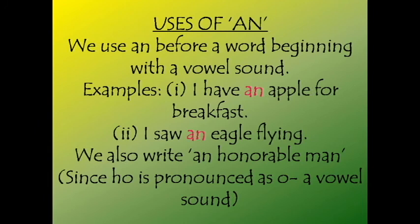Let us now have a look at the uses of an. We use an before any word which begins with a vowel sound — that is, which has the sounds of A, E, I, O and U. For example, 'I have an apple for breakfast' — an is used before apple because it starts with the vowel sound A. Another example: 'I saw an eagle flying' — an is used before eagle because eagle starts with a vowel sound.